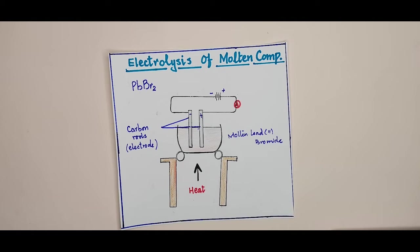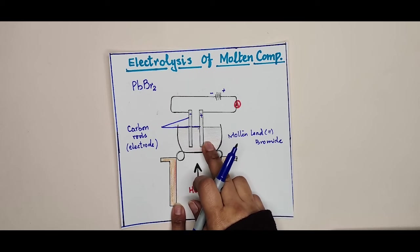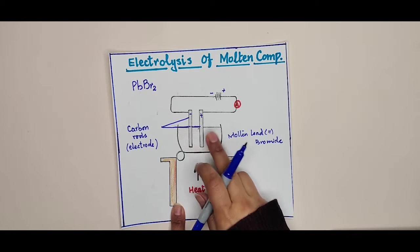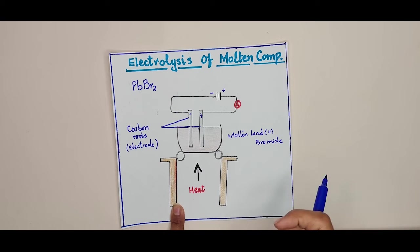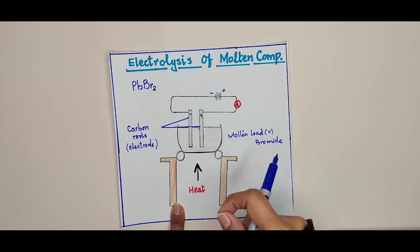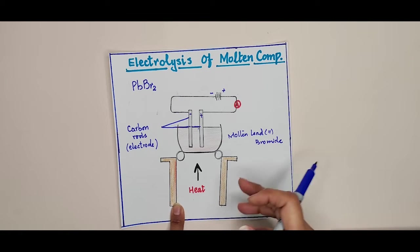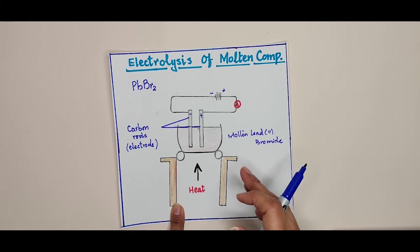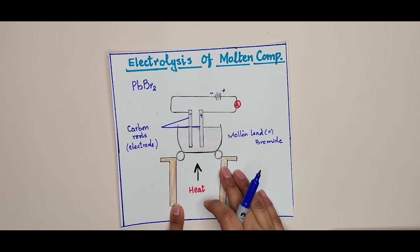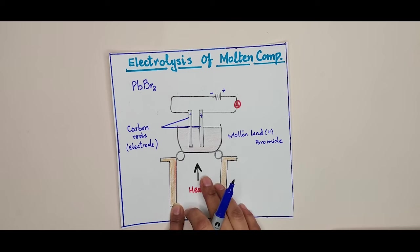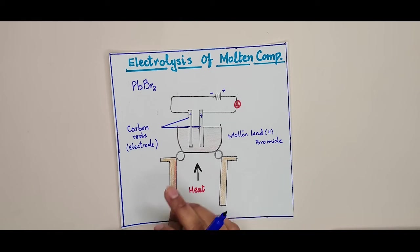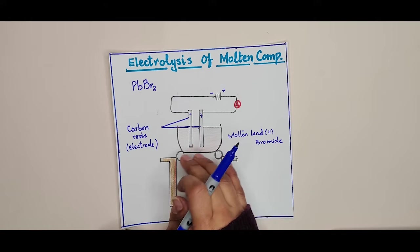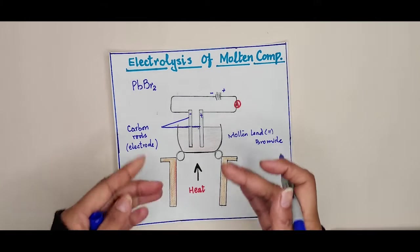Remove the carbon rods from the molten lead bromide using tongs — tongs are the apparatus used to safely retrieve items from the crucible. Pour the contents out of the crucible into a small beaker, then examine the bottom of the crucible to find out what other substance was produced during electrolysis — what is left behind after the experiment.